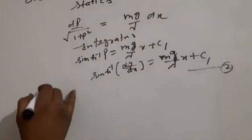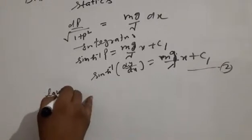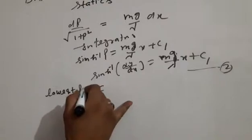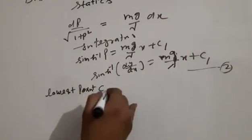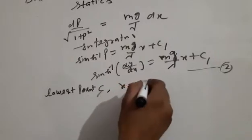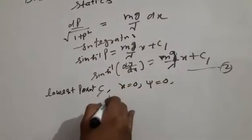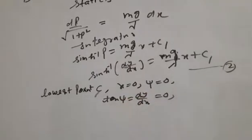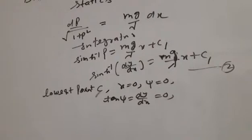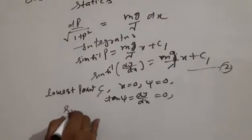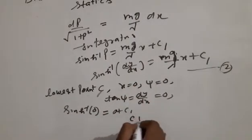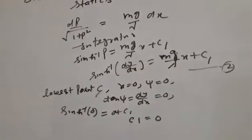Initially at the lowest point C, at lowest point C, x equal to zero. Zero equal to zero plus c1, so c1 equal to zero. Put c1 value in equation number two.